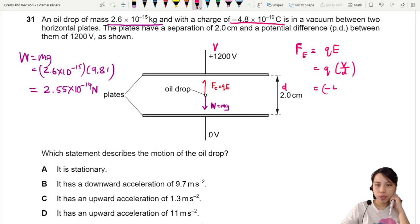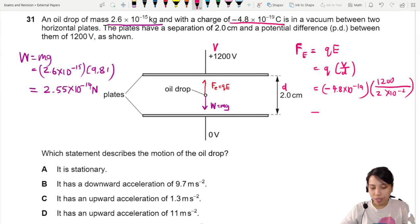This will give us negative 4.8 times 10 negative 19, V is 1200, D what's the separation distance 2 cm so centimeter must put the negative 2. This will give a value of negative 2.88 times 10 to the negative 14.